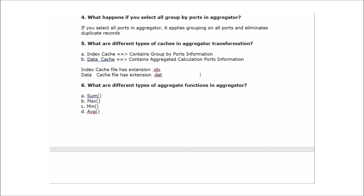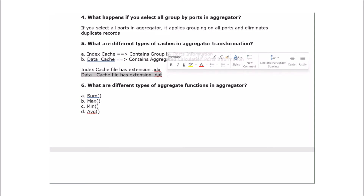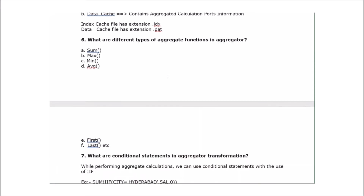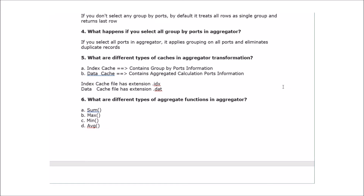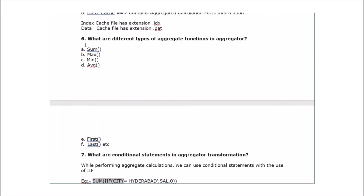The fifth question: what are the different types of caches in aggregator transformation? There are two types of cache files created when using aggregator transformation. First is the index cache, which contains only the group by ports information — saved with a .idx extension. Second is the data cache, which contains aggregated calculation port information — saved with a .dat file extension.